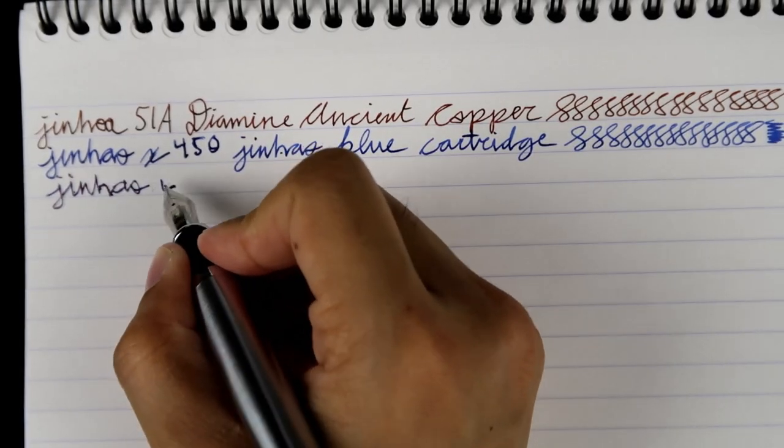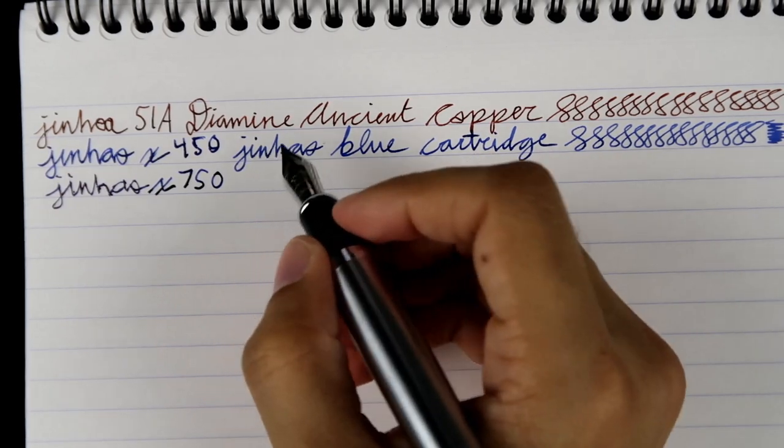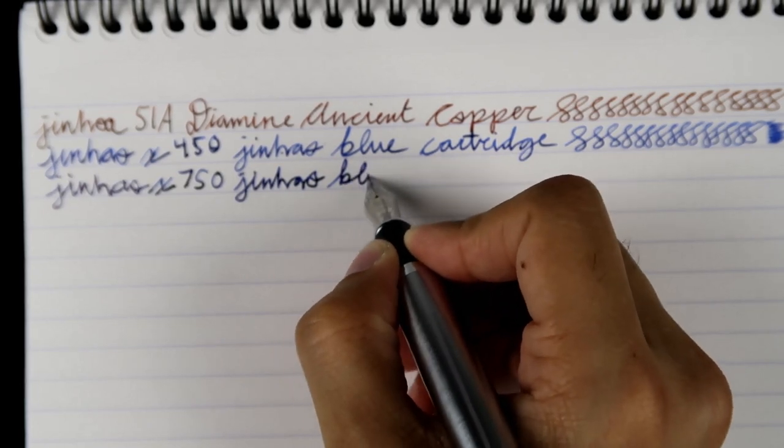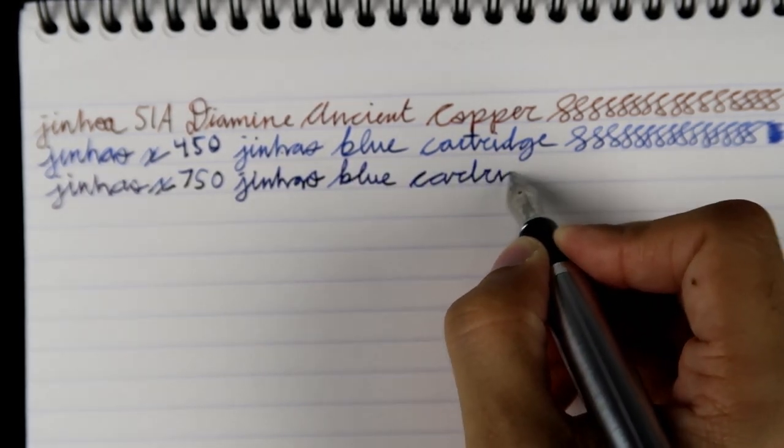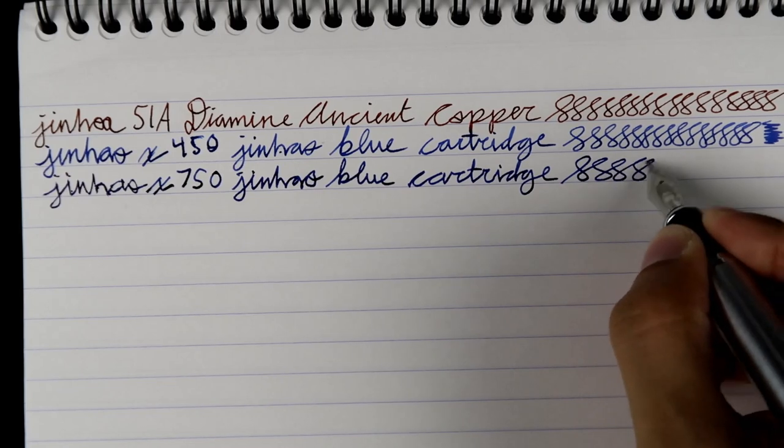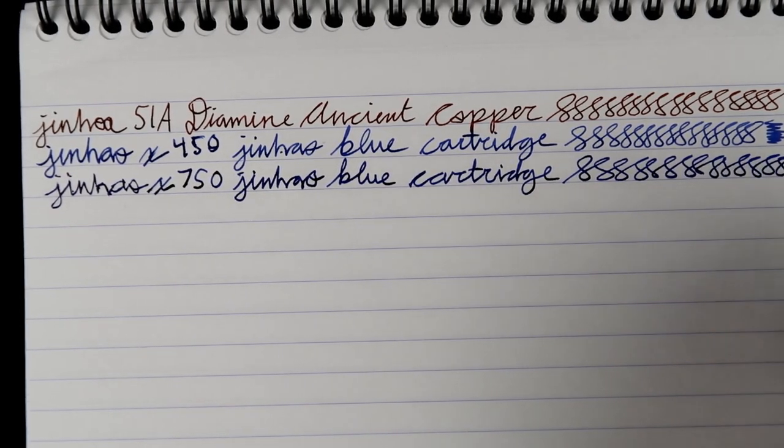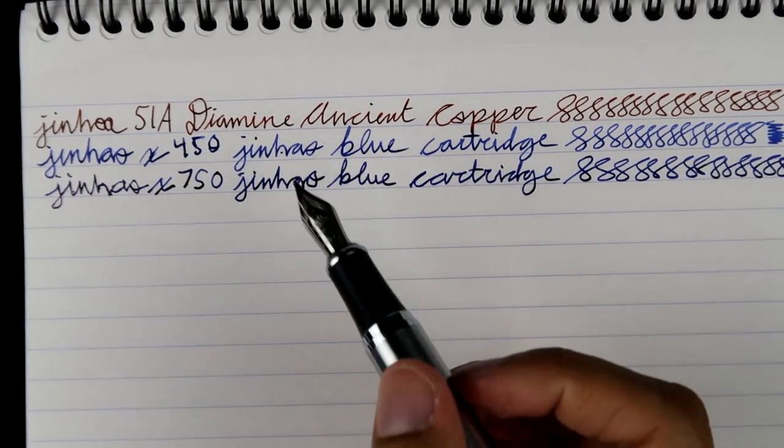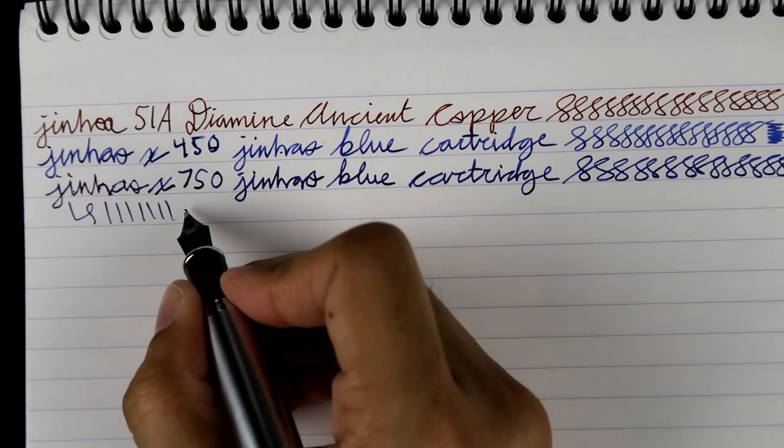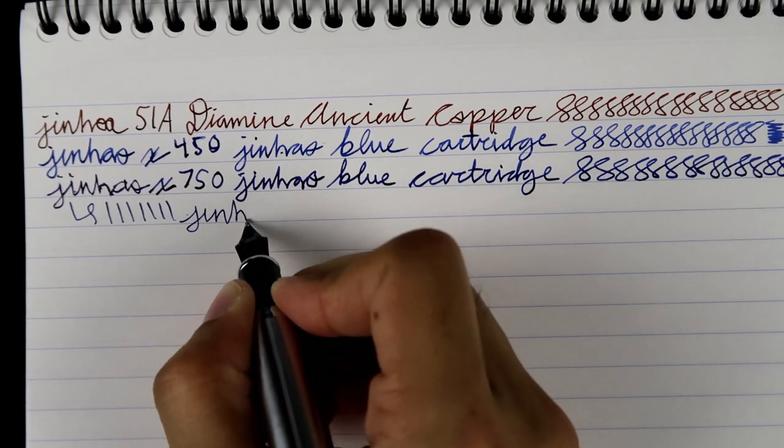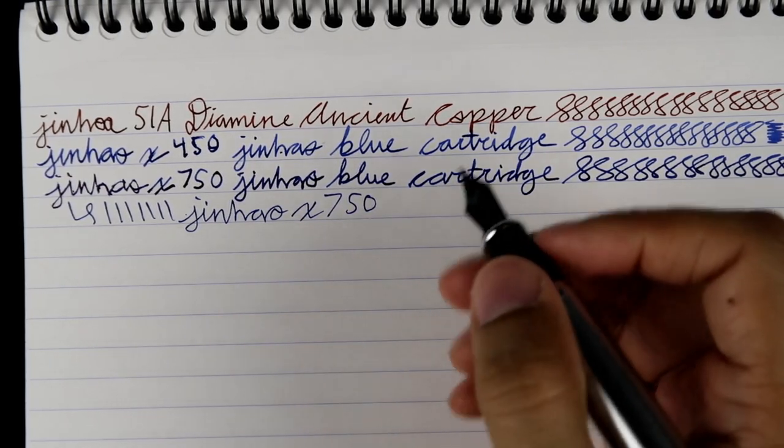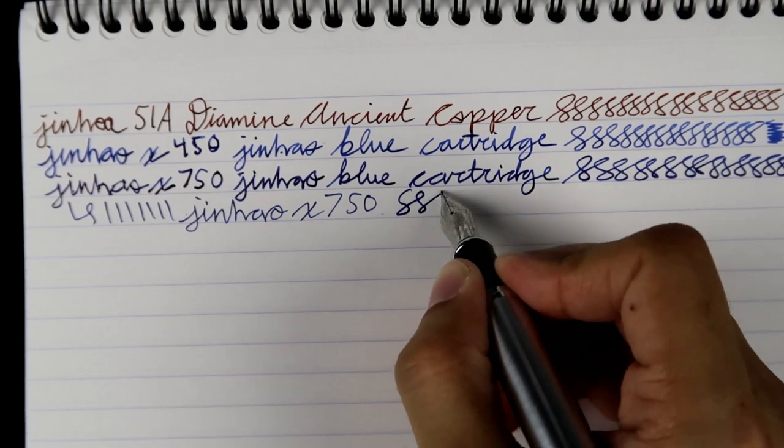This is the Jinhao X750. This is the Jinhao Blue cartridge again. You can tell these are much thicker than the Jinhao 51A with the Diamine. These just flow a lot thicker. You can also write these upside down if you want to make it a little finer. Obviously you're going to lose the smoothness because now it's super rough, but manageable. Very toothy now. Now back to the Butter King world if you flip it.